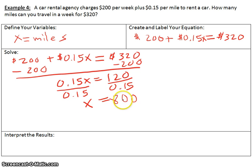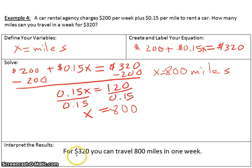Now what this means is 800 miles. X is equal to 800 miles. Now we want to interpret the results. Our results are for $320 you could travel 800 miles in one week.